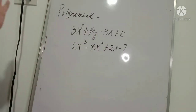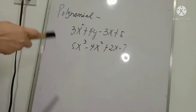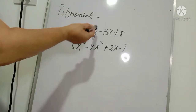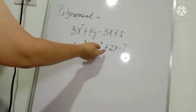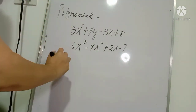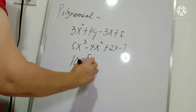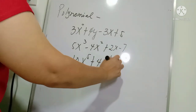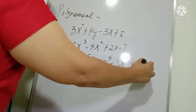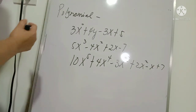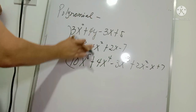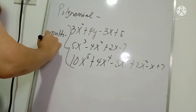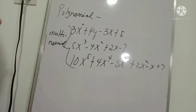A polynomial is an expression that consists of four or more terms, identified by plus and minus signs. For example, a four-term expression, or 5x³ − 4x² + 2x − 7, which has four terms. Another example is 10x⁵ − 4x⁴ − 3x³ + 2x² − x + 7. An expression with four or more terms can also be called a multinomial.